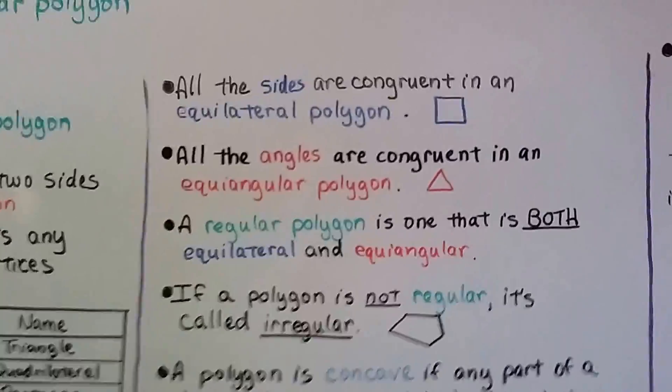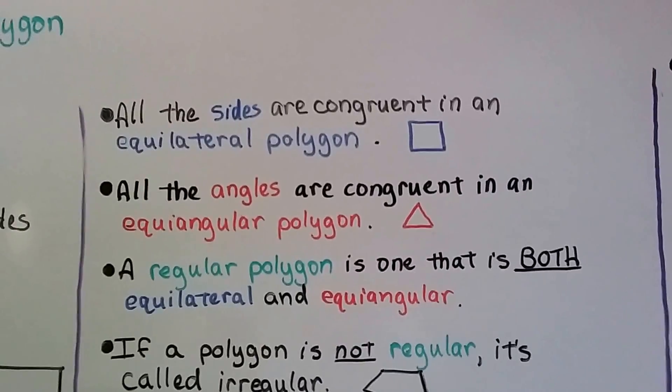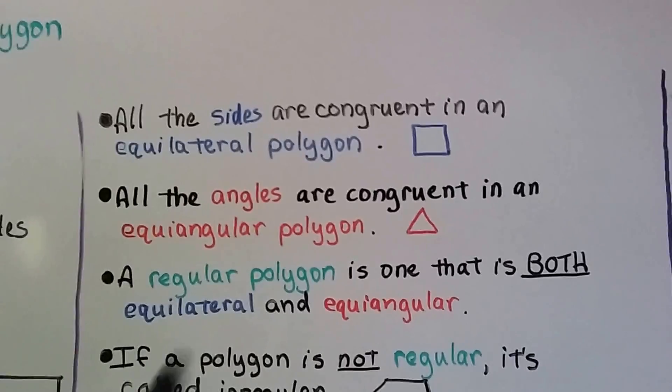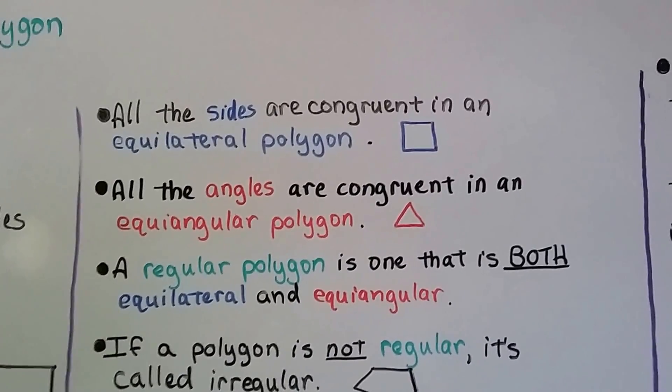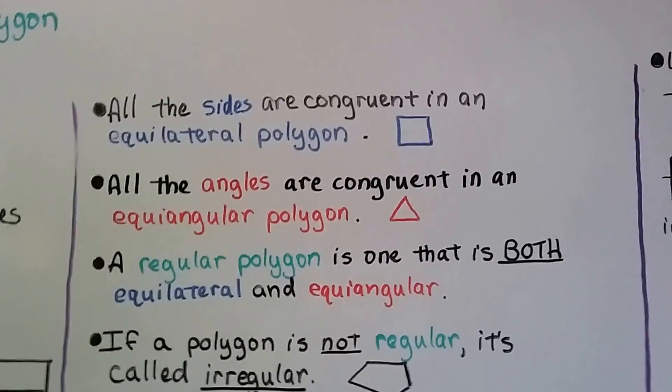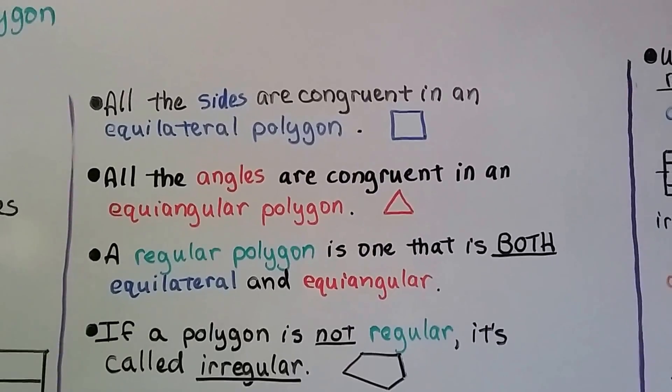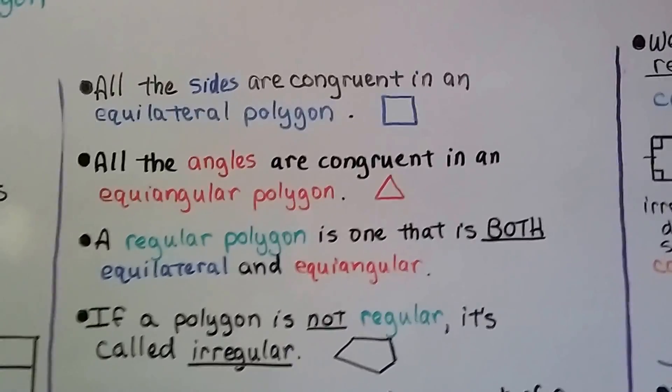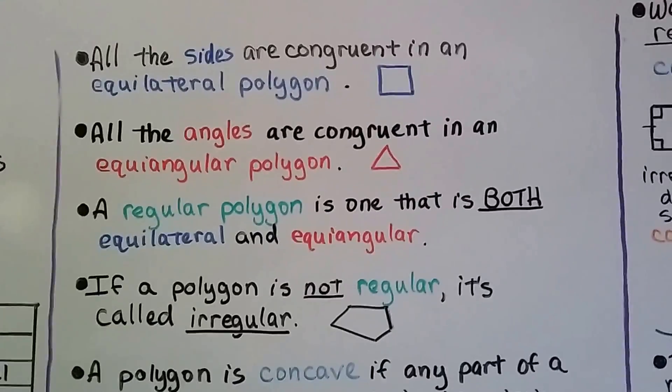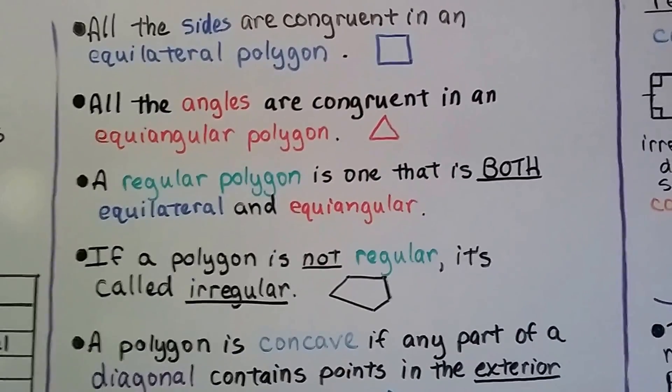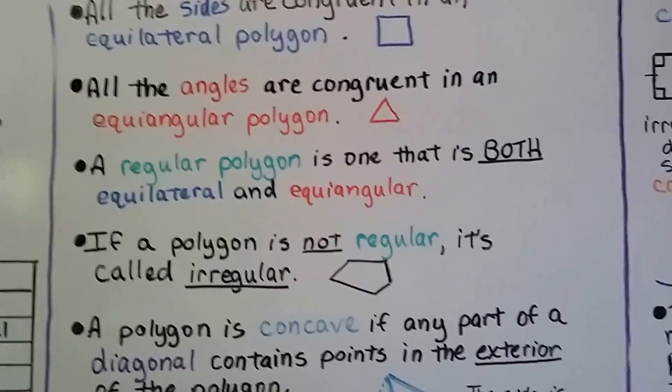All the sides are congruent in an equilateral polygon. Every side is the same side length. All the angles are congruent in an equiangular polygon, like an equilateral triangle. A regular polygon is one that is both equilateral and equiangular. If a polygon is not regular, it's called irregular.